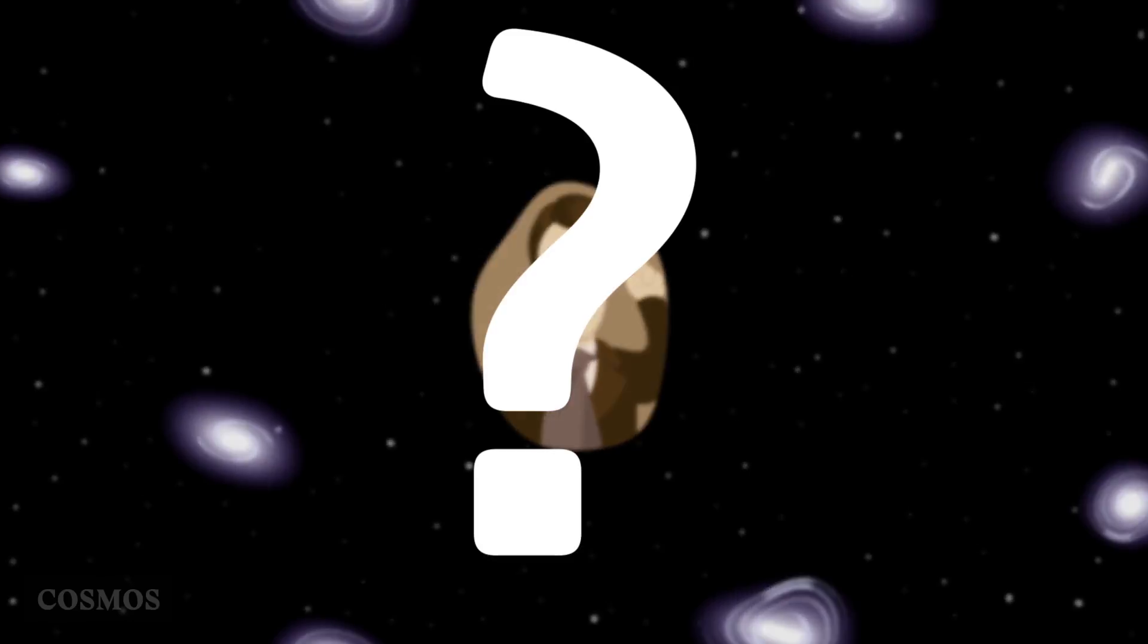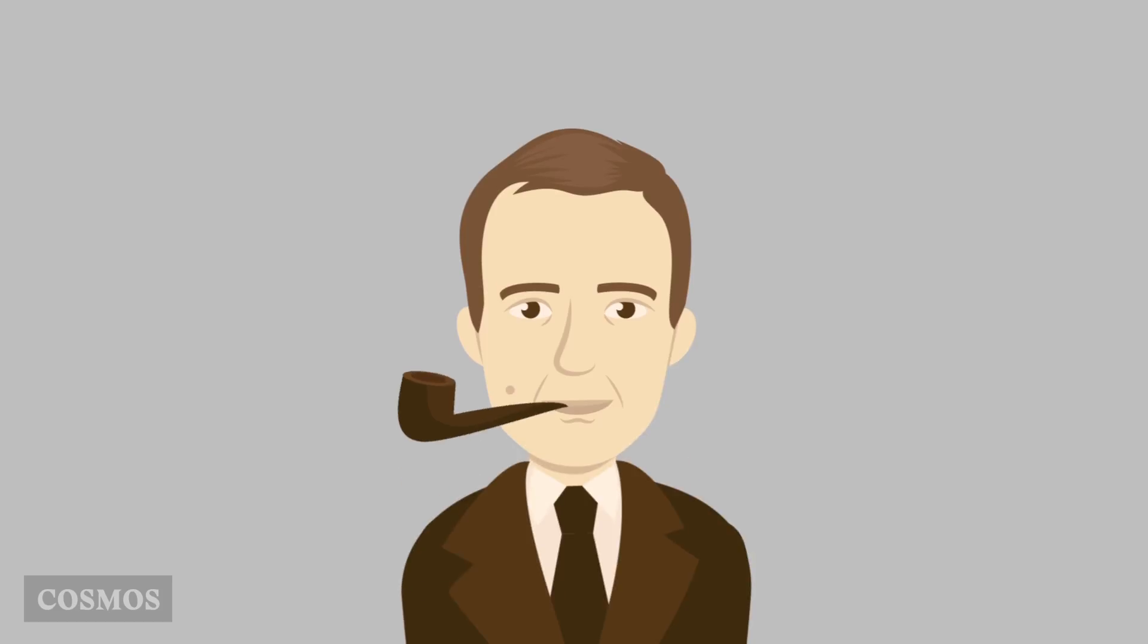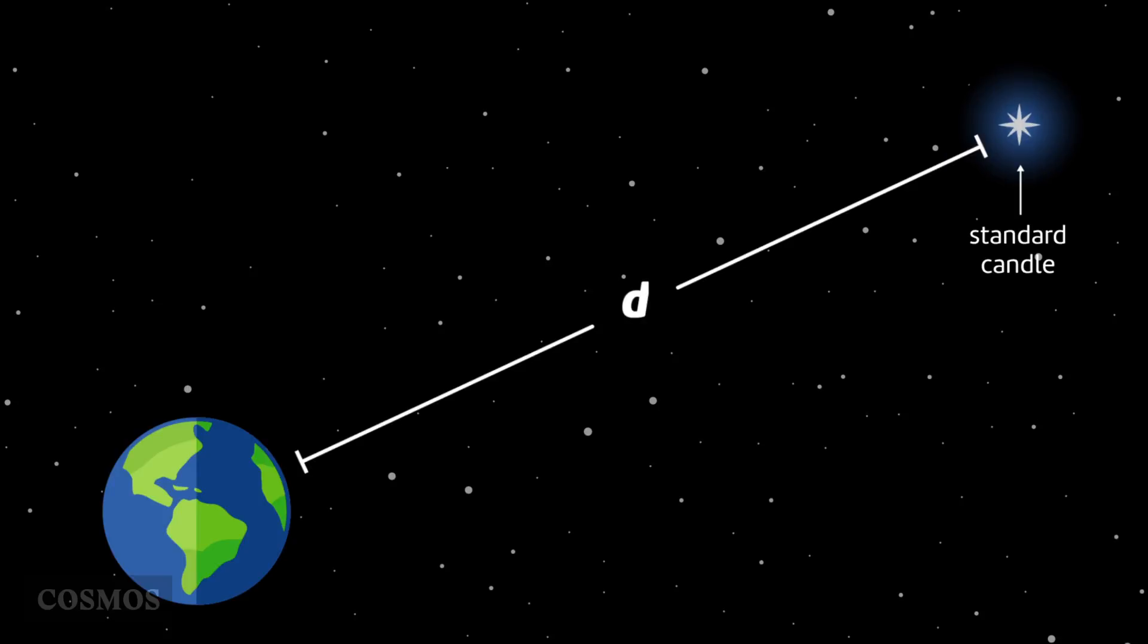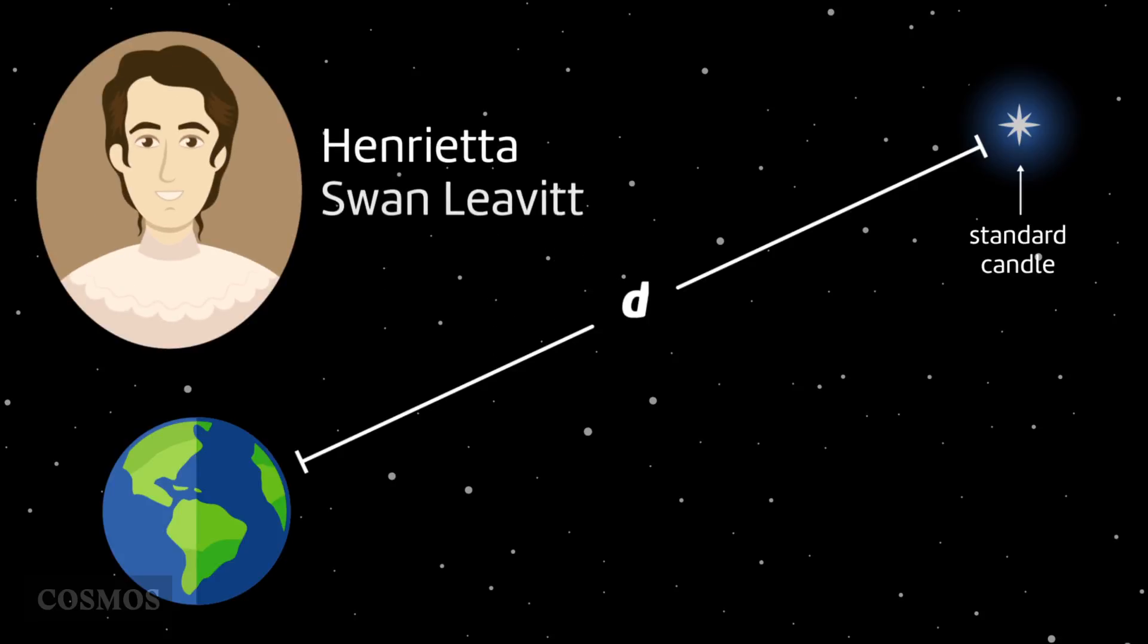But then it got stranger. In 1929, Edwin Hubble compared the redshift with how far away the galaxies were. He used the absolute brightness of a particular type of star to calculate the distances, a method discovered 20 years earlier by Henrietta Leavitt.